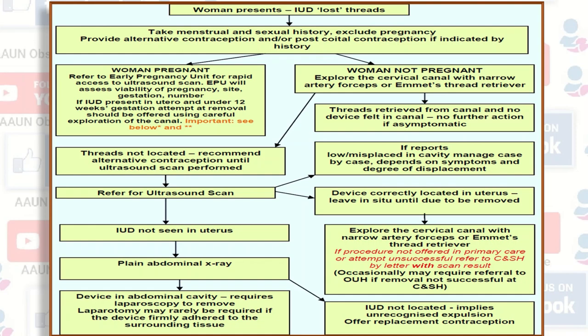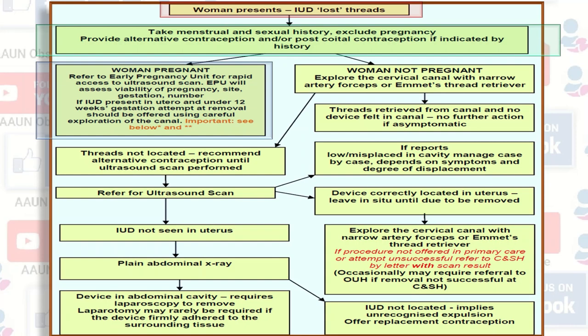As shown in the algorithm: when a woman presents with lost IUCD thread, take menstrual and sexual history, exclude pregnancy, and provide alternative or post-coital contraception if indicated. If pregnant, refer to the early pregnancy unit for rapid access to ultrasound scan to assess viability, site, gestation, and number of gestational sacs. If IUCD is present in utero and under 12 weeks, attempt removal using careful exploration of the canal.